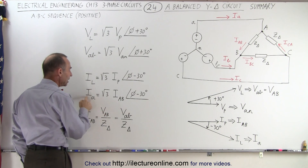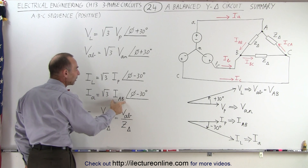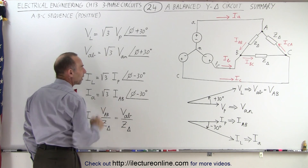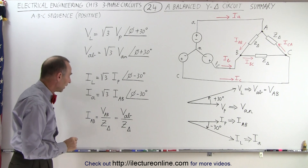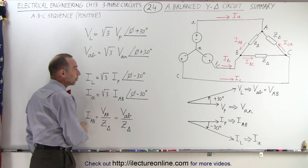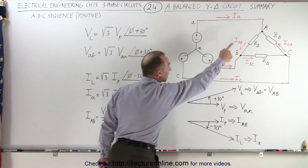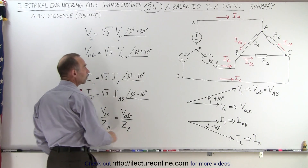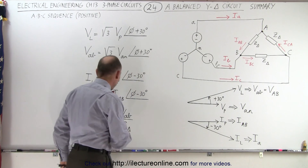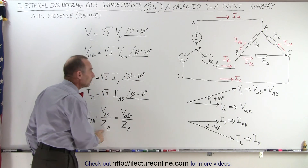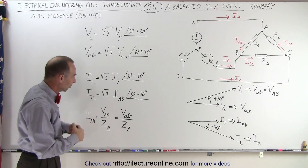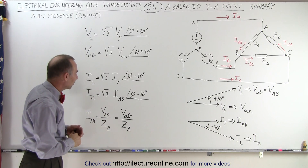For example, IA is equal to the square root of 3 times the magnitude of IAB, but we subtract 30 degrees from the phase angle. Another useful reference: the phase current IAB is equal to the voltage from A to B — which is the line voltage VAB — divided by the load impedance, which is the same for all three impedances if the load is balanced. So it's the same as taking the voltage VAB and dividing by the impedance of the load.